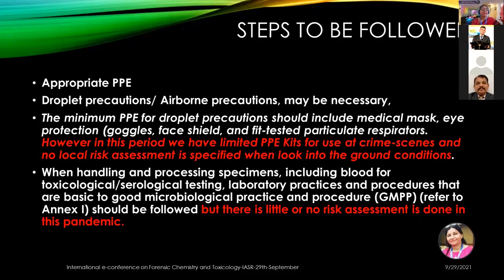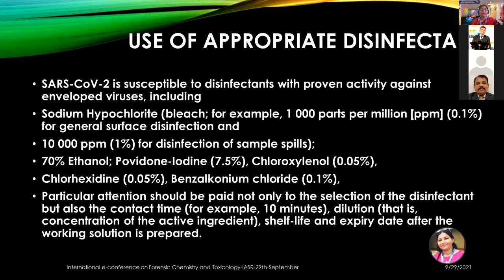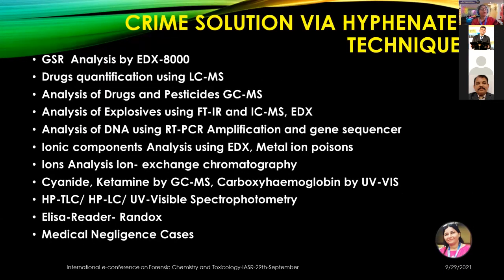One needs to follow the step of wearing a PPE kit. However, during this period, there were limited PPE kits for use at crime scenes and no local risk assessment was specified when looking at ground conditions. When handling and processing specimens like blood in toxicological and serological testing, we should follow GMPP, and there was little or no risk assessment done during this pandemic. Appropriate disinfectants can be used, such as sodium hypochlorite, ethanol, povidone-iodine, cresol, benzalkonium chloride, and chlorhexidine, selected based on contact time, dilution, shelf life, and expiry date when working solutions are prepared.